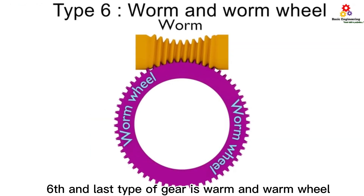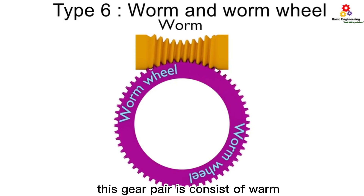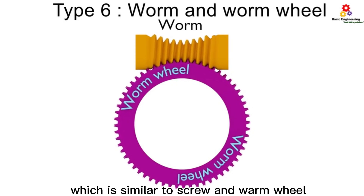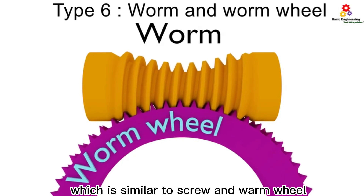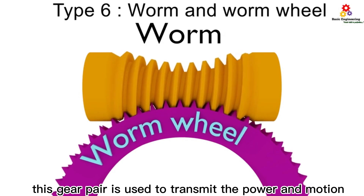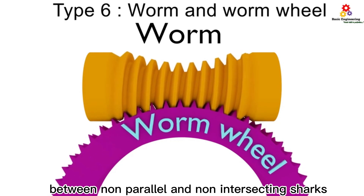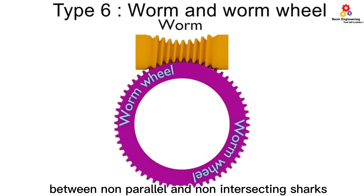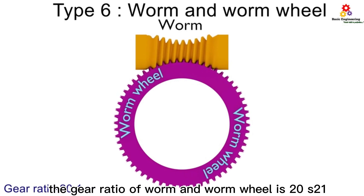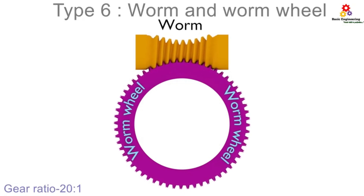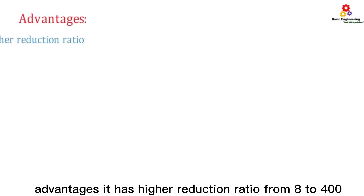The sixth and last type of gear is worm and worm wheel. This gear pair consists of a worm, which is similar to a screw, and a worm wheel. This gear pair is used to transmit power and motion between non-parallel and non-intersecting shafts. The gear ratio of worm and worm wheel is 20:1, and it has a higher reduction ratio from 8 to 400.